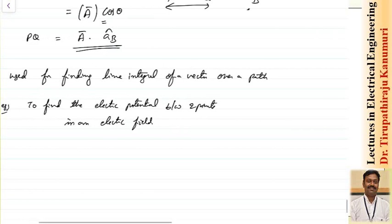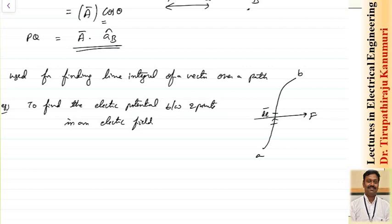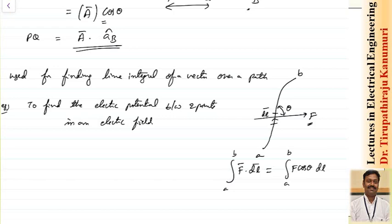We are going to see this when we go to electrostatics. Let us assume there is some vector f passing with multiple lines. If I want to integrate from point A to point B, I take the small differential length dL directed in some direction, with angle theta between them. For the line integration, you have to do the projection of f in the direction of dL. The line integral is the integration of f dot dL, which is f cos theta times dL, integrated from A to B.